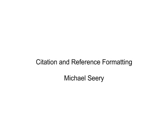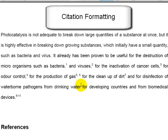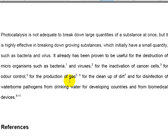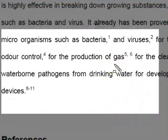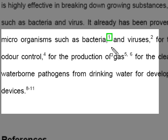We're going to have a look at some reference formatting when you cite references in your project work. When you cite references, we're going to follow the Royal Society of Chemistry guidelines. What this means is that you put a superscript number after where you want to reference. Here I'm putting a superscript number 1 after this statement.